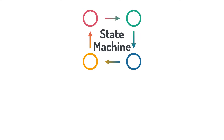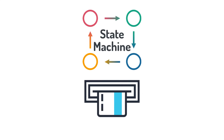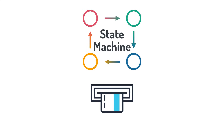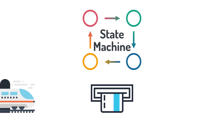State machines are used everywhere, and most of us interact with them on a daily basis without even realizing it. Every time you withdraw money from the ATM with your bank card, buy train tickets from the ticket machine, or when you use the air conditioner, there is a state machine behind it. In fact, almost every machine uses the function of a state machine.